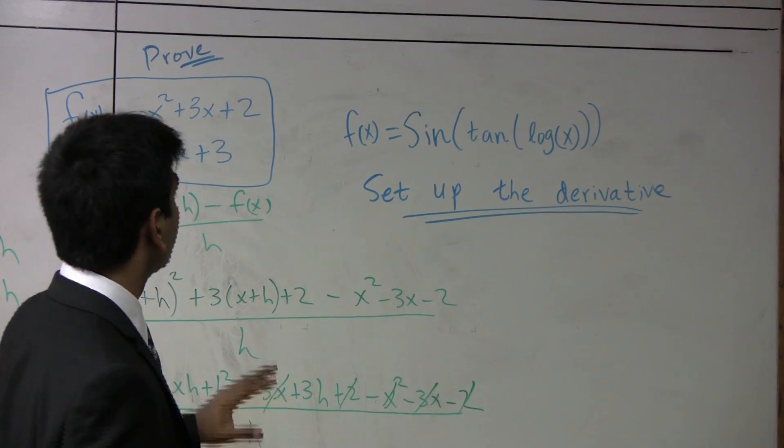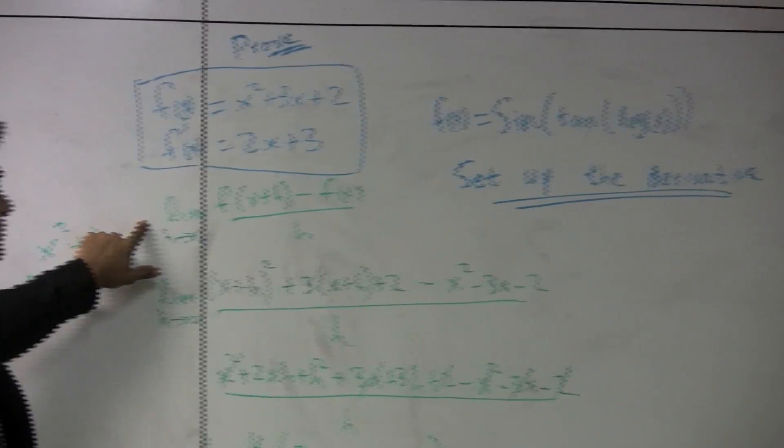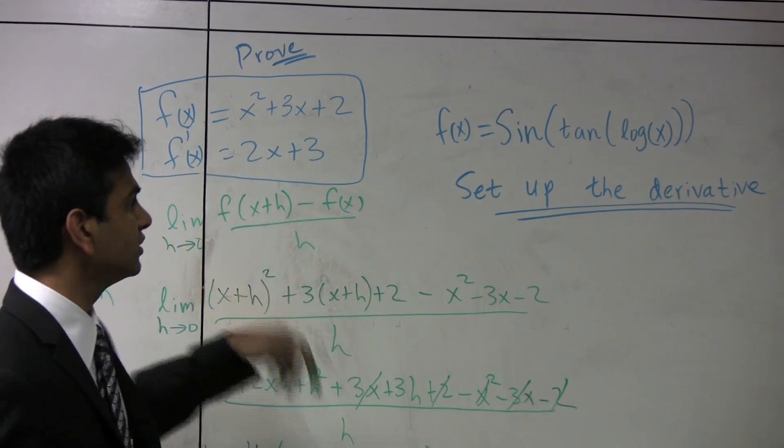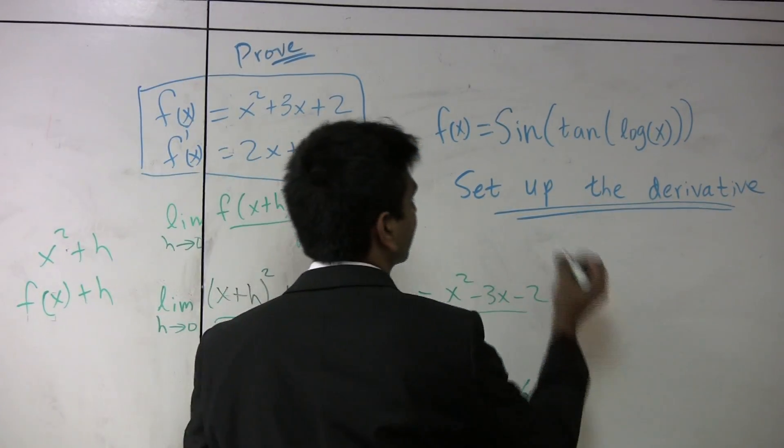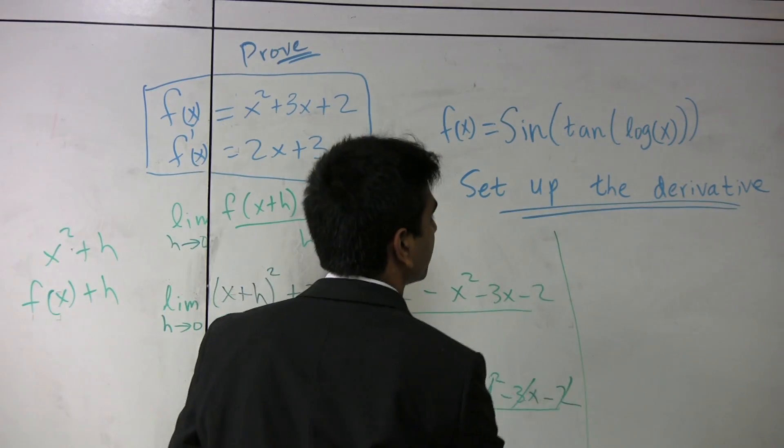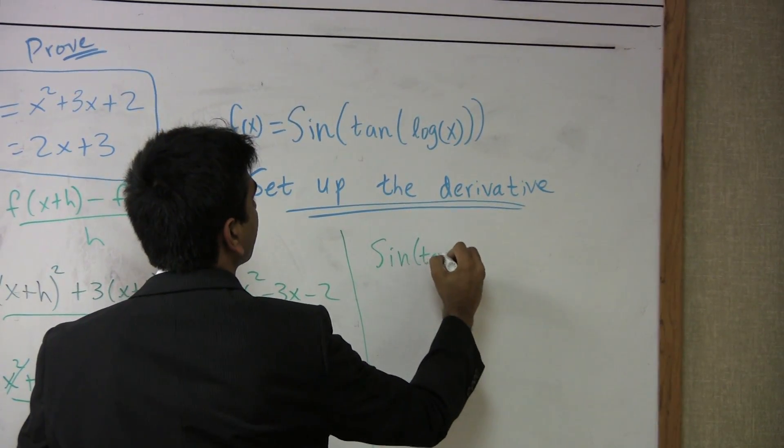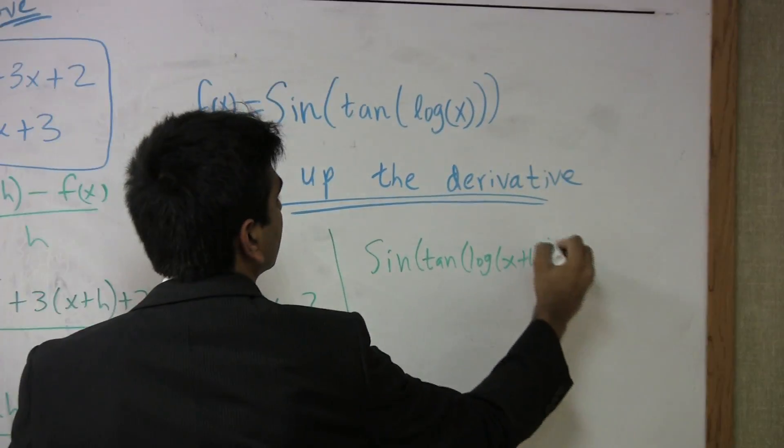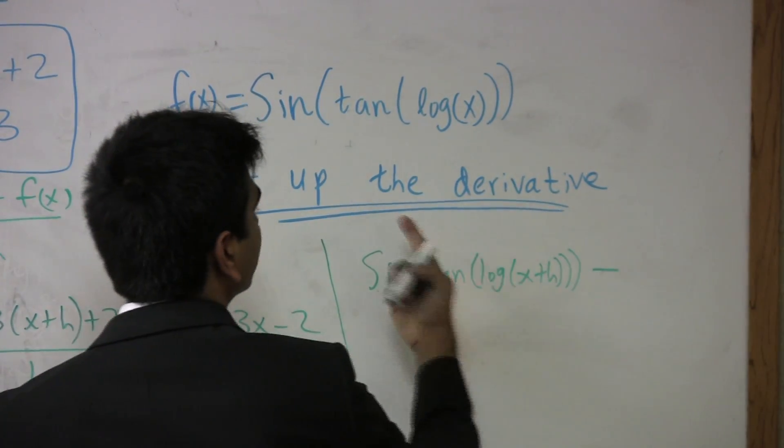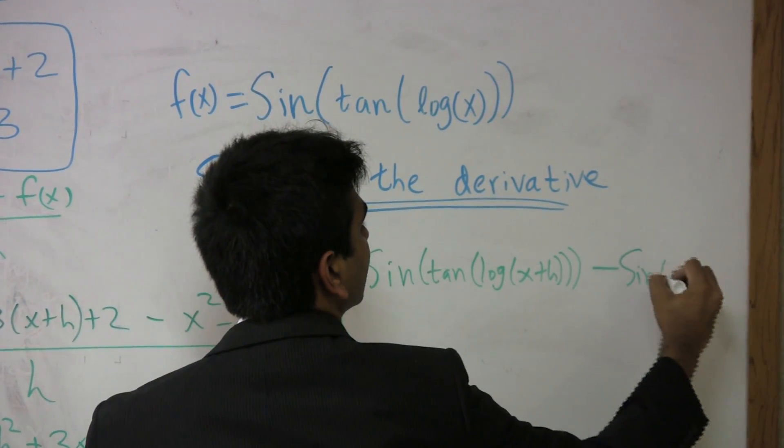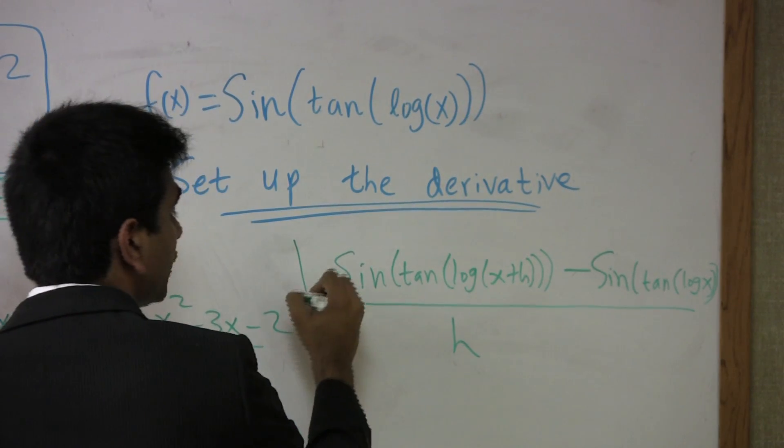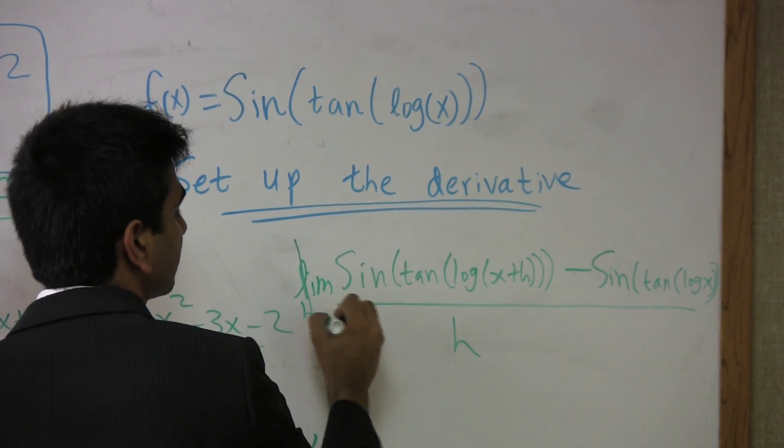All you have to do is plug them into this equation. So, if this is f of x, what's f of x plus h? Just use x plus h instead of x. So, this will simply be sine of tan of log of x plus h minus the original function, which is just sine of tan of log of x over h. And this is all you're going to have to do. Don't forget to write out the limit.